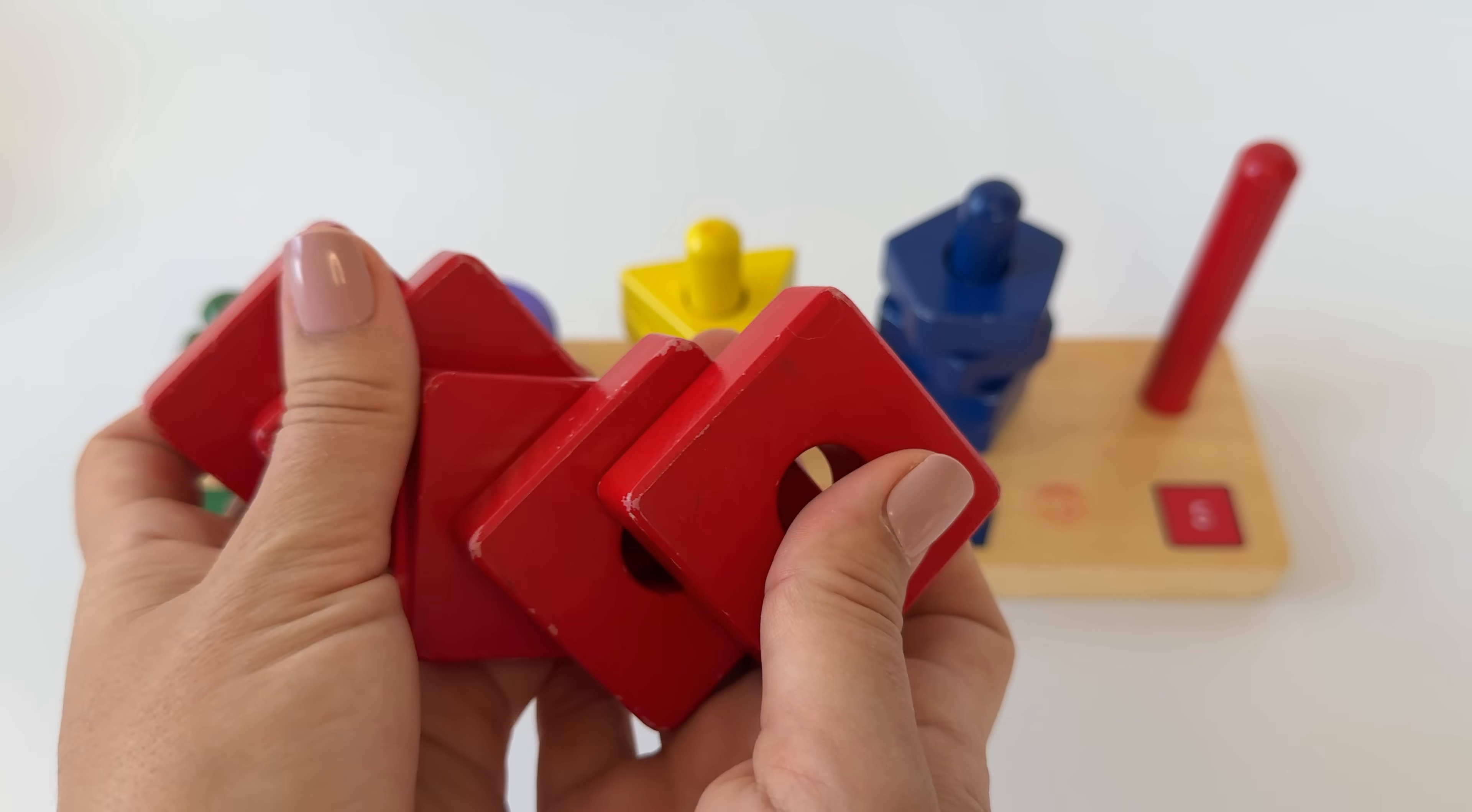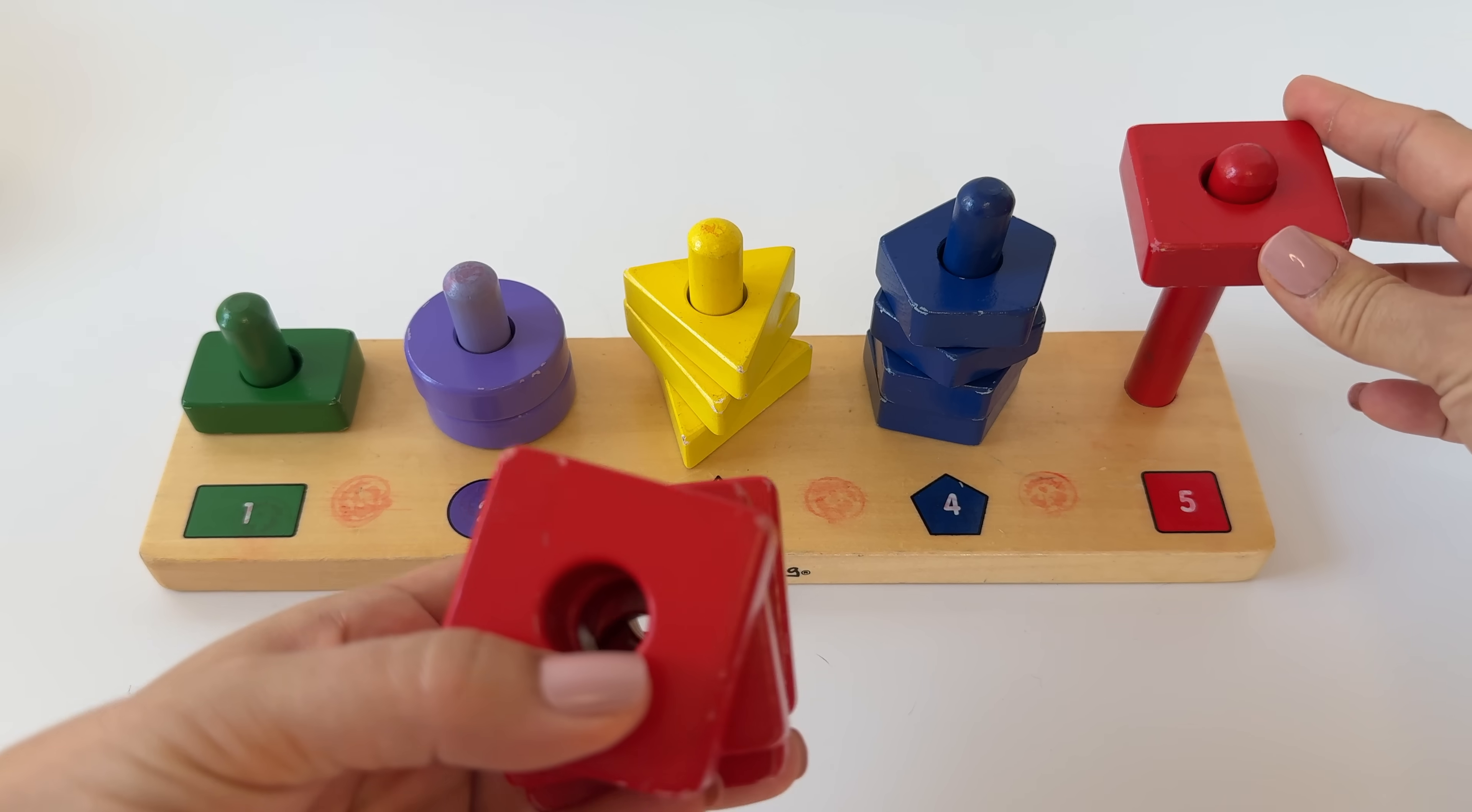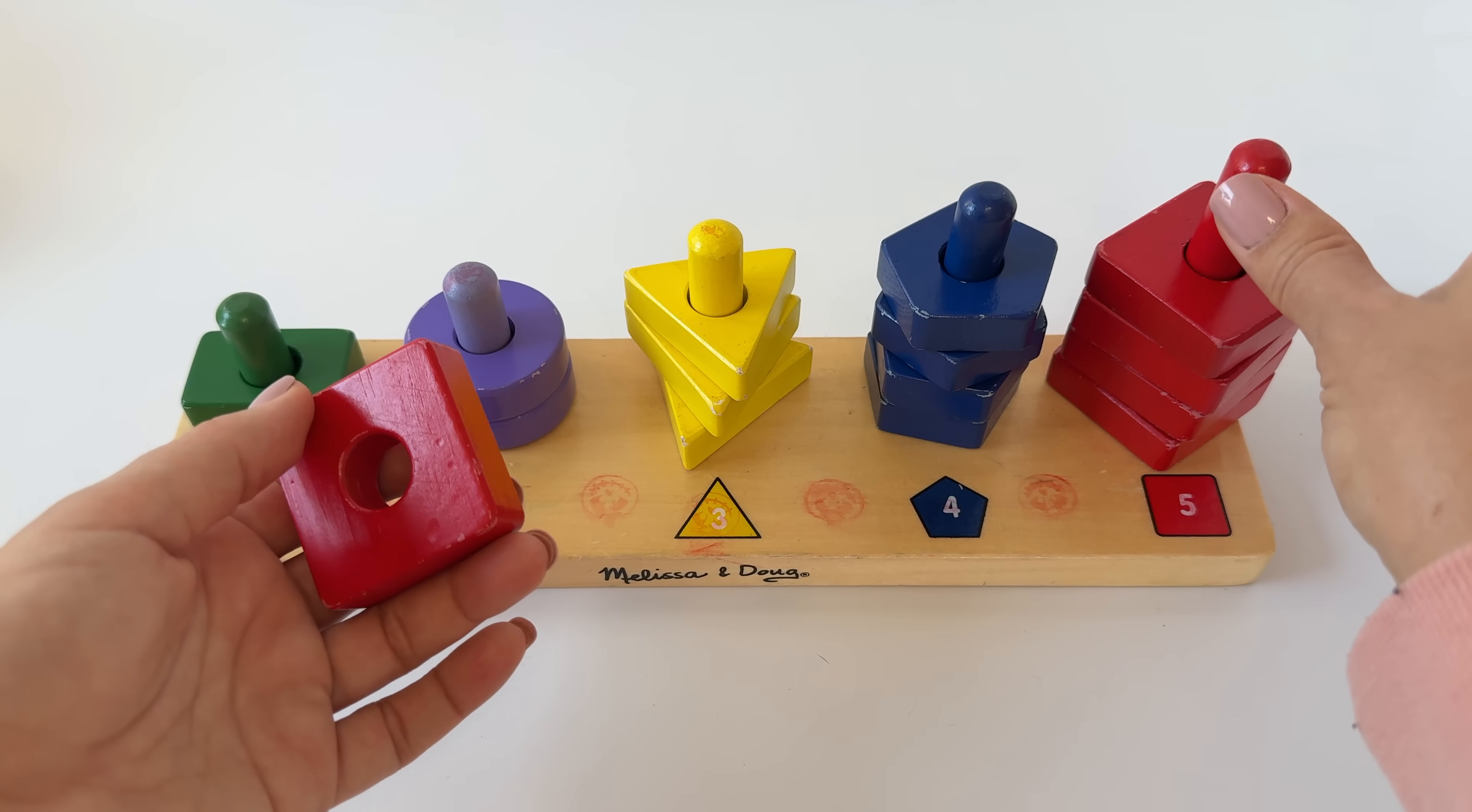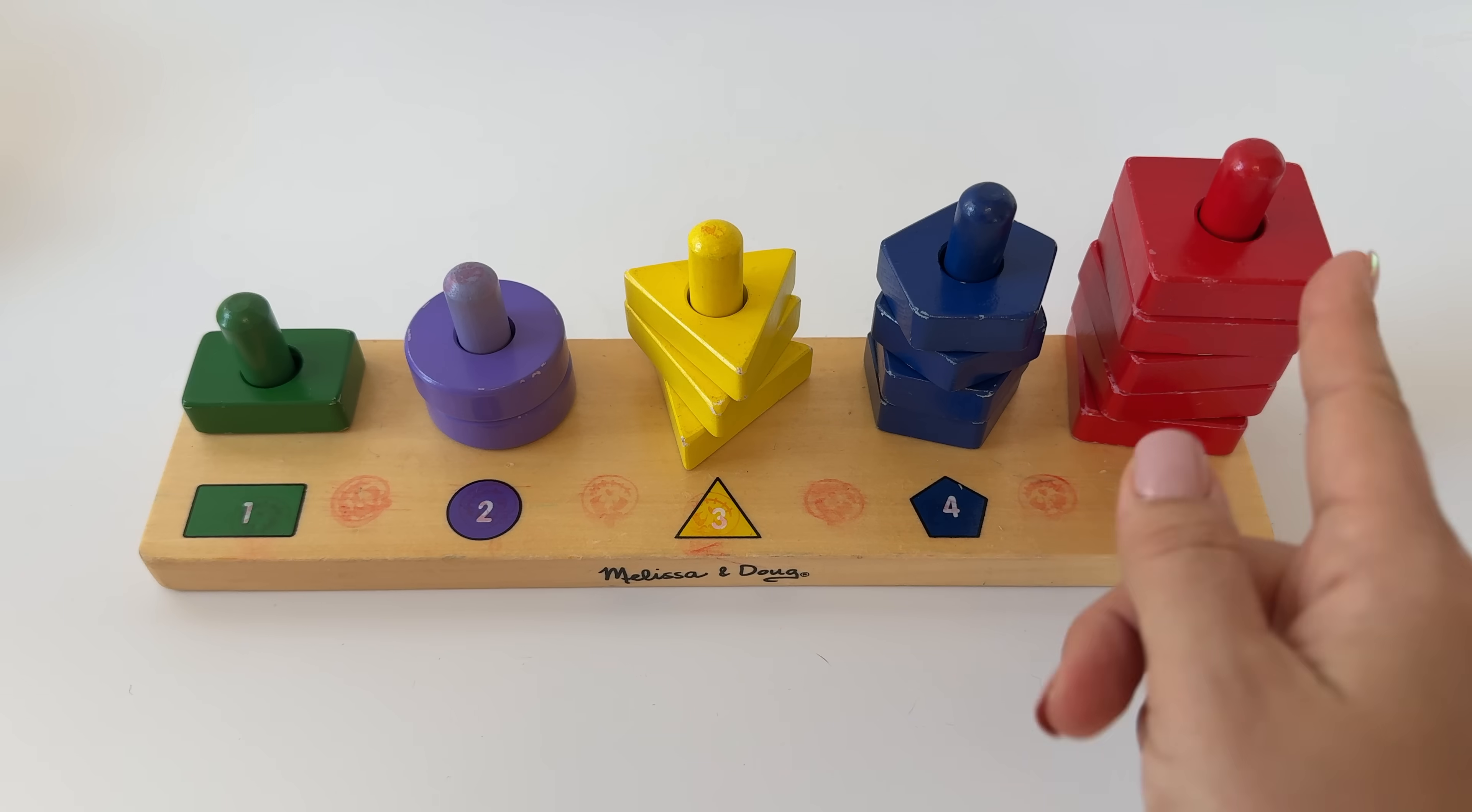Here are the squares. Let's count all the red squares. One, two, three, four, five. Five red squares. Let's make a square.